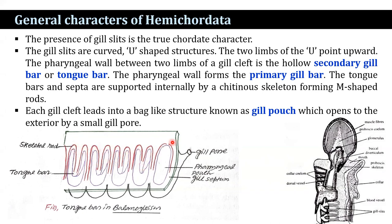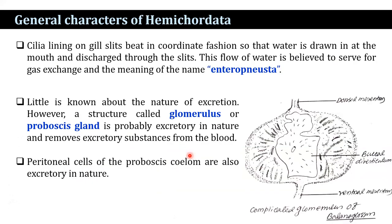Each gill cleft leads into a bag-like structure known as a gill pouch, which opens to the exterior by a small pore. Cilia lining the gill slits beat in a coordinated fashion so that water is drawn in at the mouth and dispersed through the slits. This flow of water serves for gas exchange, and the meaning of the name Enteropneusta is that the animals essentially breathe through portions of their gut.